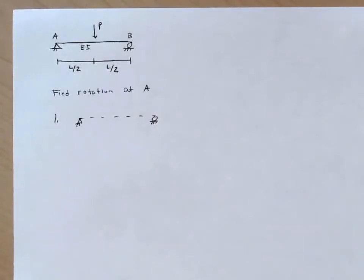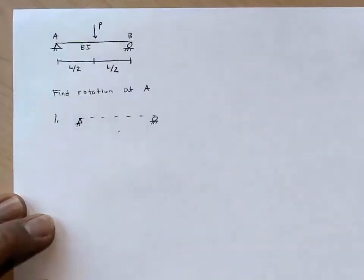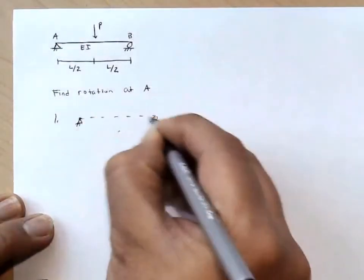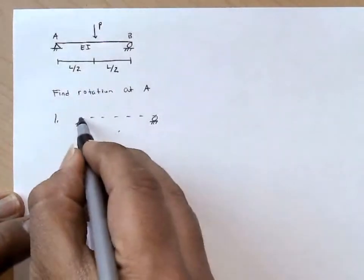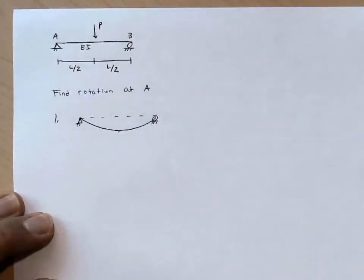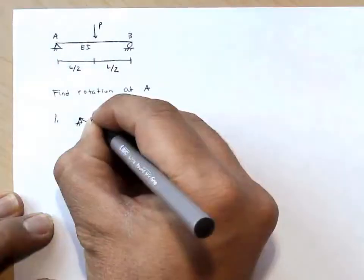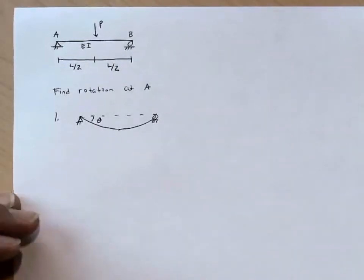To sketch the deformed shape, we'll think that the point under the load P really has to move down. It's going to move down to about here. The point at the pin and the roller have to stay at the pin and the roller, and so we'll have a smooth curve that looks something like this. And we're interested here in this rotation right at A. Now this step isn't strictly necessary, but it helps to visualize what it is that we're looking for.